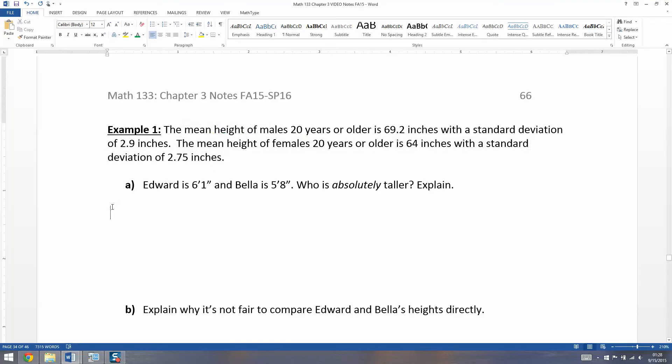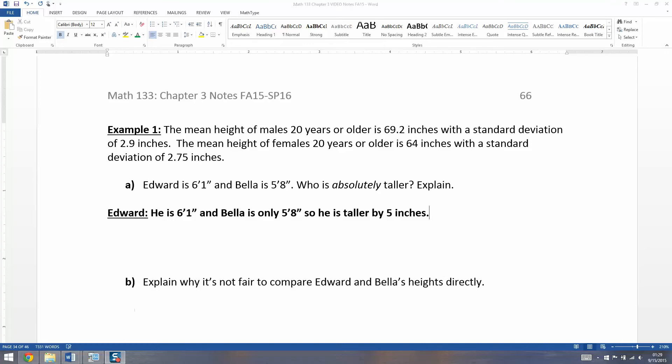So two random people named Edward and Bella, for all you Twilight fans out there, have two different heights. Edward is 6'1" and Bella is 5'8". Who is absolutely taller? Well, absolutely means in real life terms, when they're standing next to each other, who's taller? Edward. Edward is 6'1" and Bella is only 5'8", so he is taller by 5 inches.